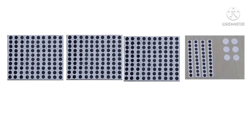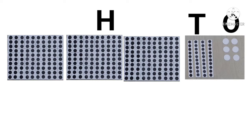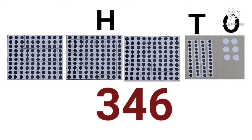Now, the next one. Three hundreds, four tens and six ones makes what number? It is three hundred and forty-six.